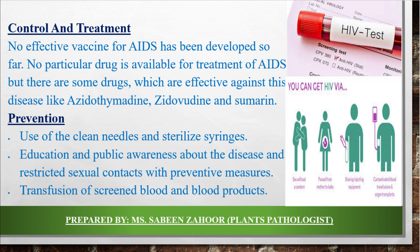Now we have to discuss control and treatment. How can we treat HIV and AIDS? There is no effective vaccine for AIDS developed so far. No particular drug is available for the treatment of AIDS, but there are some drugs which are effective against the disease, like azidothymidine, zidovudine, and sumerine. These are the common medicines given to patients.